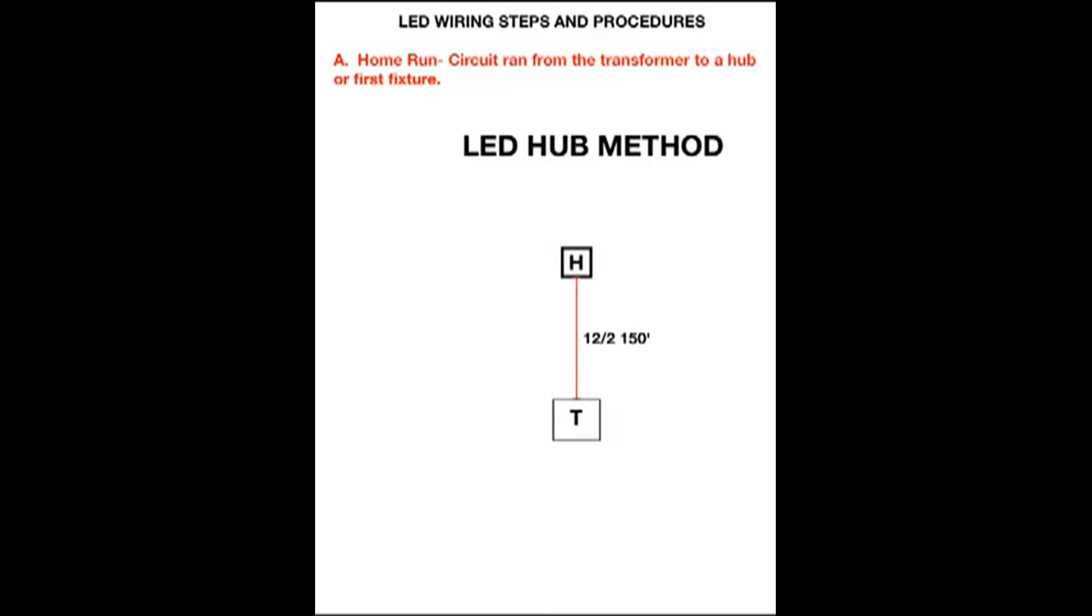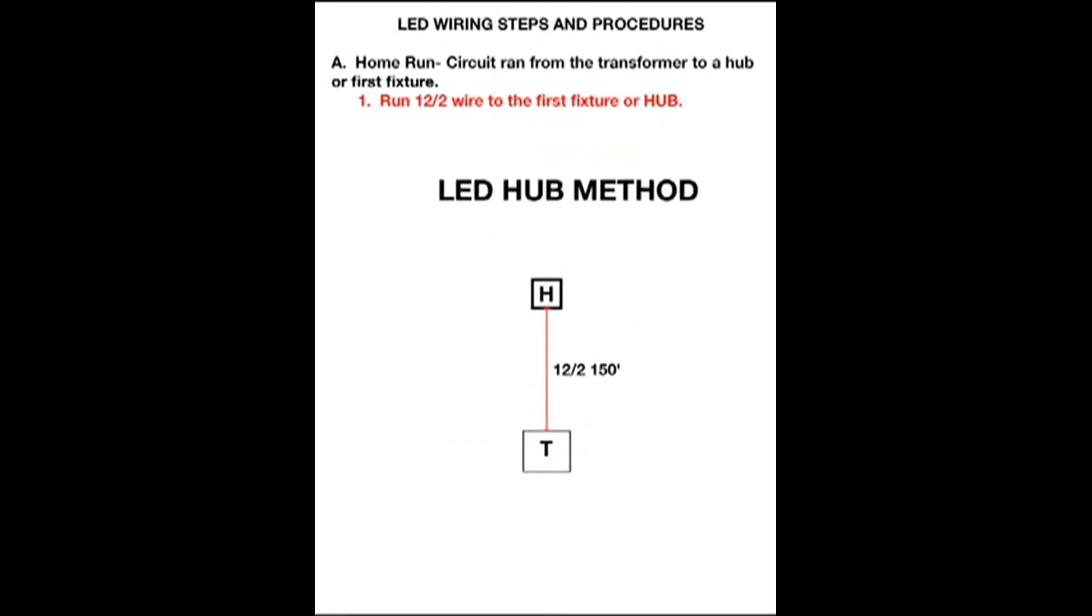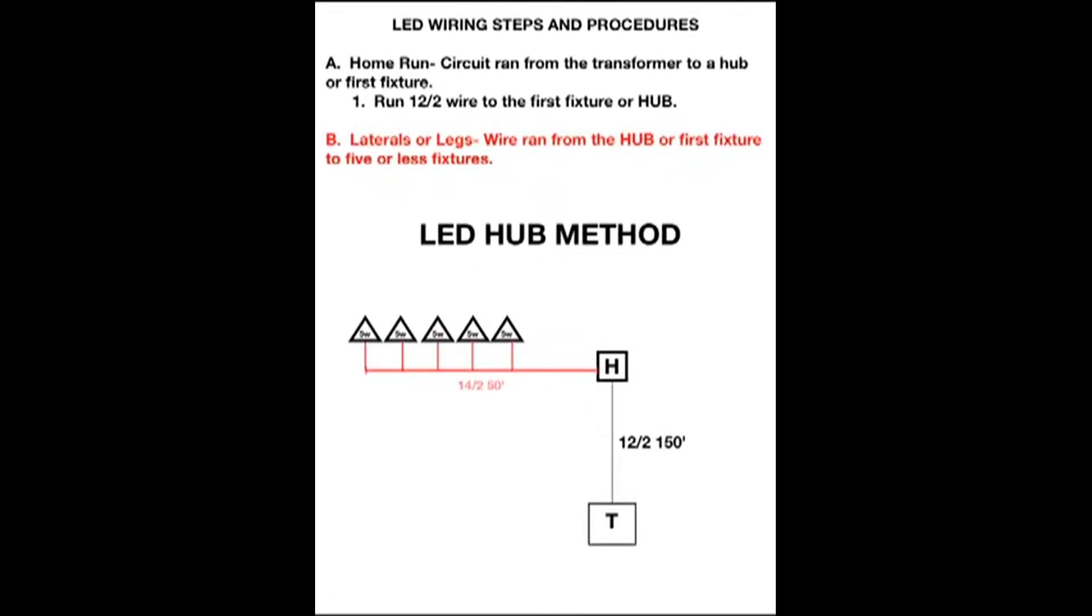Home Runs is a circuit ran from your transformer straight to your hub or the first fixture. When running your Home Run, use 12-2 wire from your transformer straight to your hub or your first fixture.